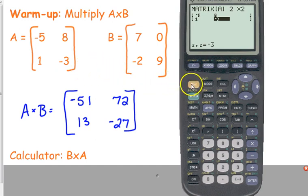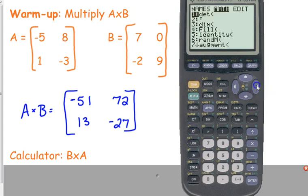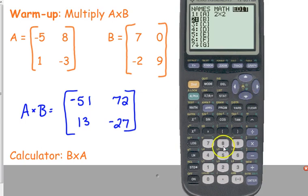Then I'm going to put in matrix B, so I'm going to go back to my matrix menu, second matrix, over to edit, but this time I'm going to go down to B. It is also a two by two, so I'm going to put in two times two.